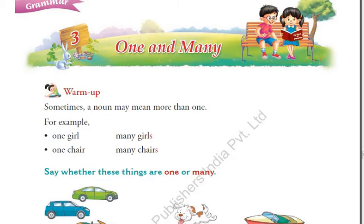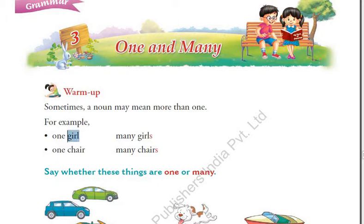So students, what we started yesterday is chapter number 3. The name of the chapter is 'One and Many.' In this lesson, I first explained how to make the plural out of a singular word. Sometimes it is possible just by adding 'S' at the end of the word. For example, if it is one girl, we say 'a girl.' If more than one, we say 'girls.' The difference is only the letter S.